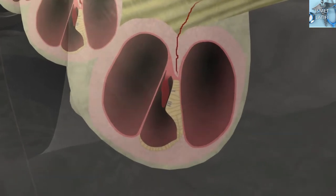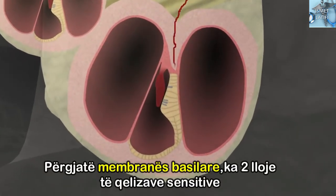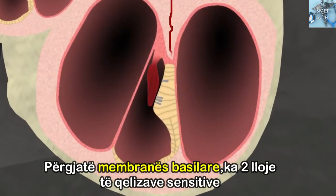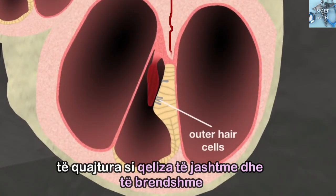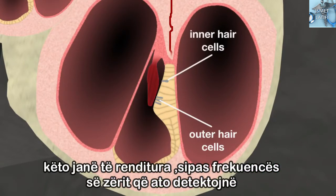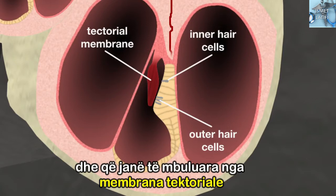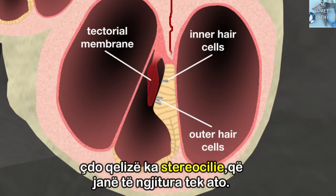Along the basilar membrane are two types of sensory cells, or hair cells, called the outer and inner hair cells. These are arranged in rows according to the frequency, or pitch, of sound they detect, and covered by the tectorial membrane. Each hair cell has tiny hair-like projections, called stereocilia, attached to them.